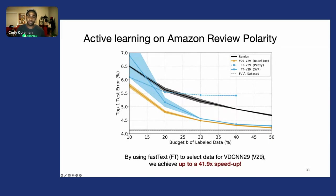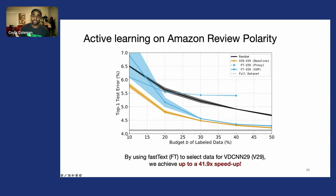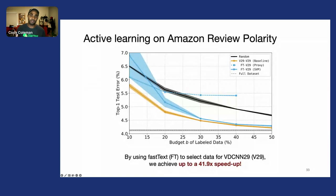We find that we can speed up the process of data selection by close to 42x, while allowing VDCnnN29 to achieve effectively the same test error.